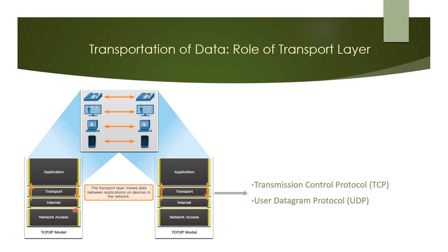The transport layer has no knowledge of the destination host type, the type of media over which the data must travel, the path taken by the data, the congestion on the link, or the size of the network. The transport layer includes two protocols: Transmission Control Protocol (TCP) and User Datagram Protocol (UDP).